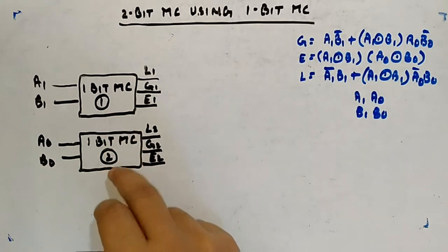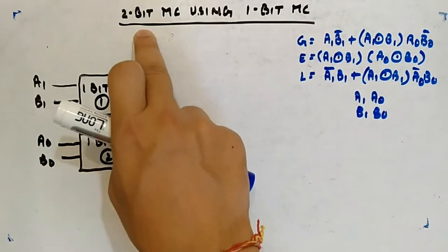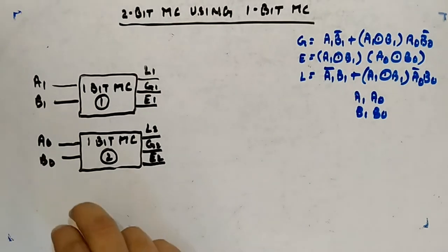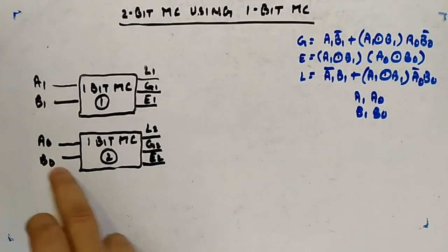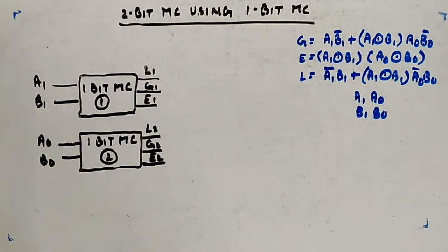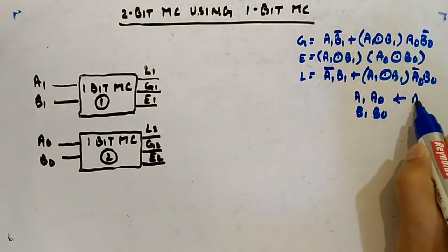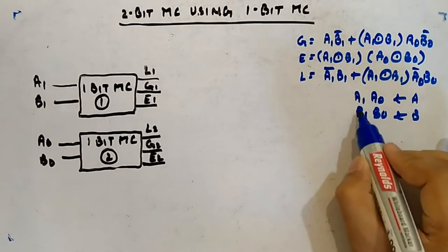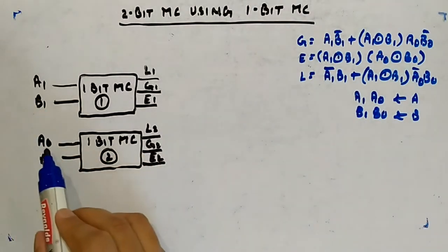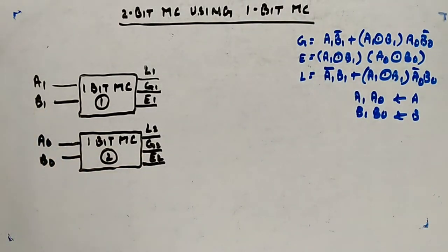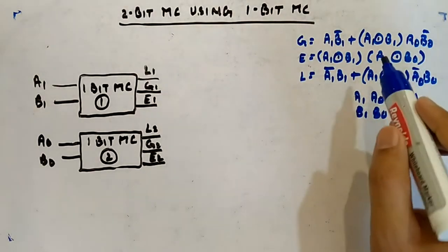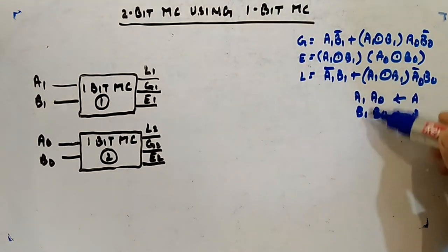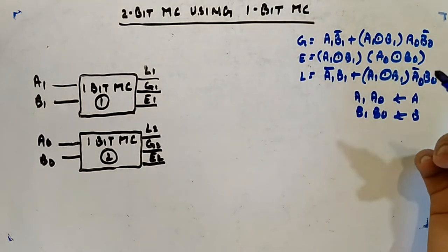Here I have taken two one-bit magnitude comparators because I need to make a two-bit magnitude comparator. I am giving the MSBs here and the LSBs here. This is how A will look, and this is B. A1 and B1 are given to the first comparator, and A0 and B0 are given to the second. We have to look at the statements, not the expression.